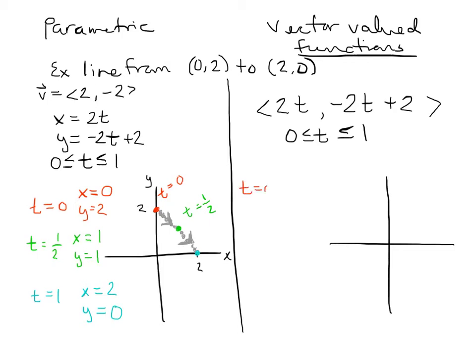For vector-valued functions, I do the same thing: plug in t equals 0 into the vector. We get the same points, but in vector form. At t equals 0 we get the vector pointing to (0, 2). At t equals one half, we get the vector (1, 1), pointing to that point if we start at the origin.